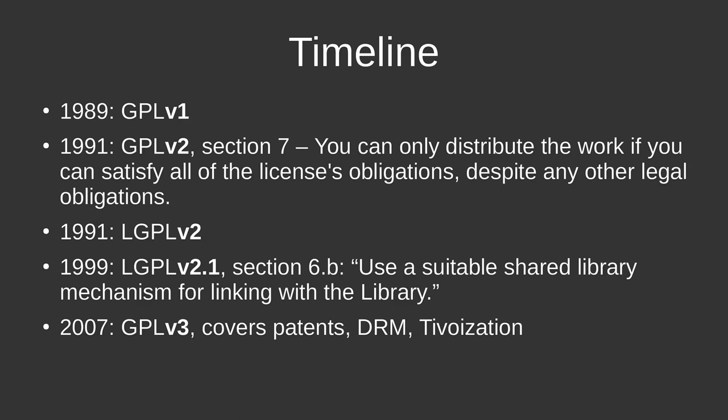Coming forward to the actual timeline: we know it's from the 80s, so GPL version 1 was released in 1989. Then in 1991 a clause called 'Freedom or Death' was added as Section 7 to GPL v2 — it basically means that if you are restricted by other laws such that you cannot satisfy all the obligations of the license, then you may not license the code at all. If you live in a jurisdiction where you can't use the code for any purpose, then you can't use it at all. Along with that, LGPL v2 was also added.